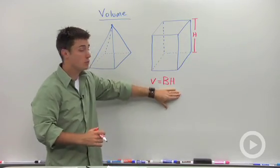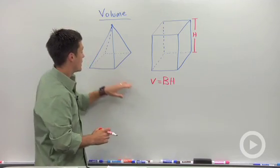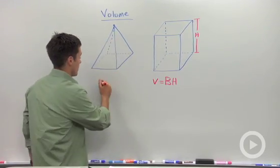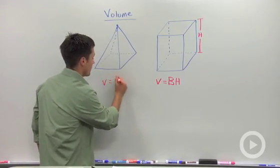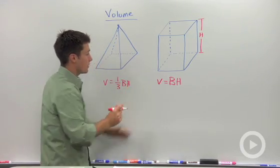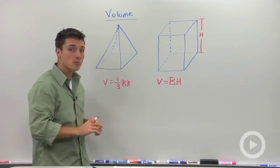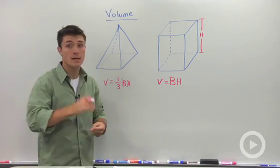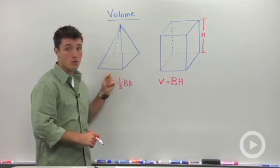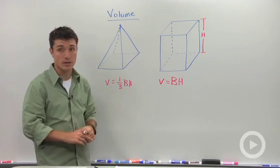The relationship between the volume of a rectangular prism and a pyramid — where they have the same height — is that the pyramid's volume will be one-third the volume of the rectangular prism. This is very similar to the relationship of cones and cylinders. So for a pyramid or a cone, the formula is one-third times base area times height.